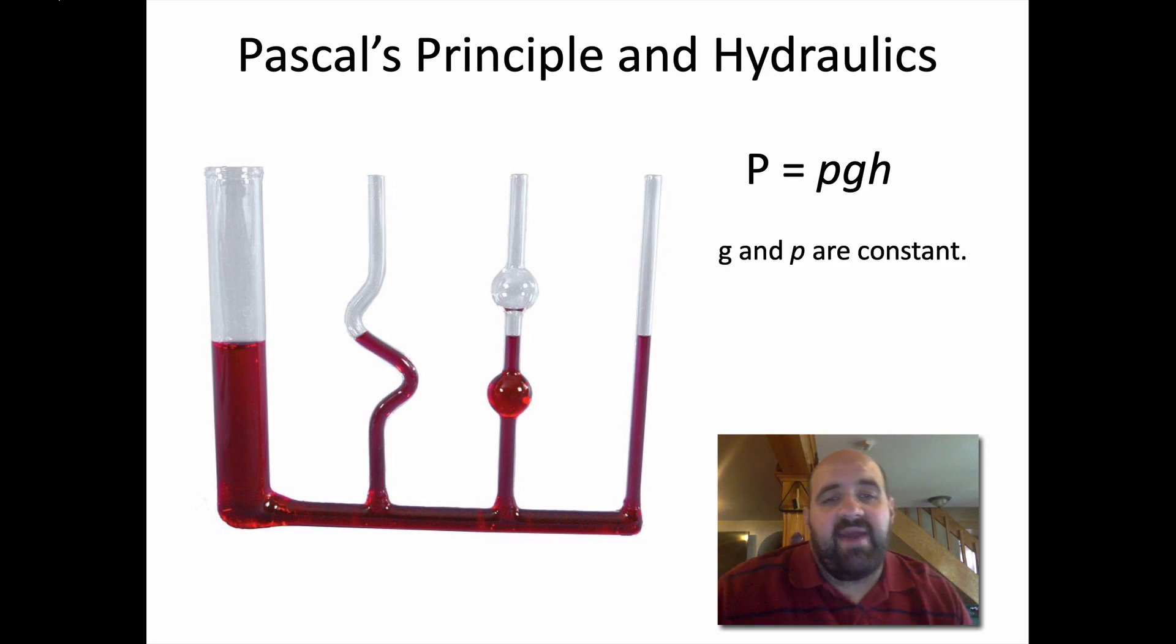We know that if we have a container of water or a swimming pool, g and ρ are relatively constant. The density of the water is a constant value for the most part, and gravity is a constant 9.8 or 10 meters per second squared.